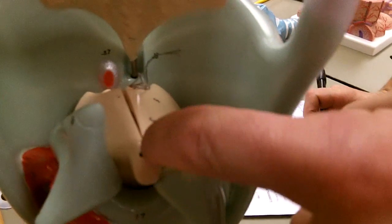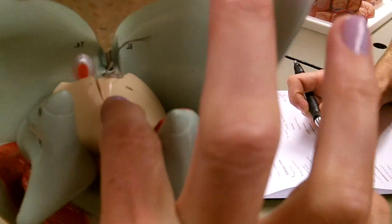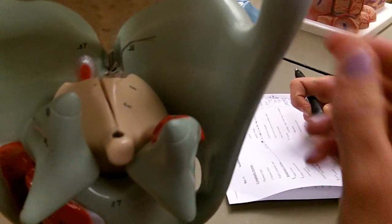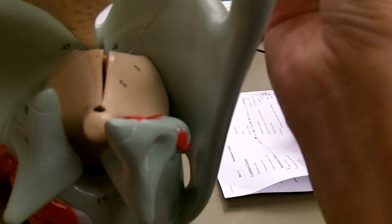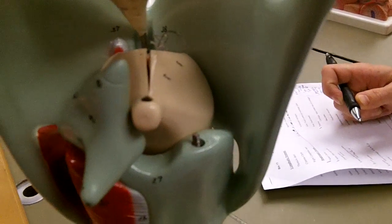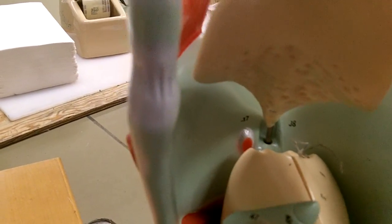These guys? Yes. And the arytenoids, when they move, they cause the true vocal cords to open and close. And when this model was functioning, when the arytenoids were moved, the vocal cords would actually move. But it's been abused by students.